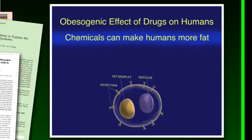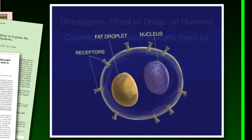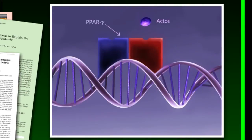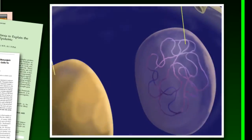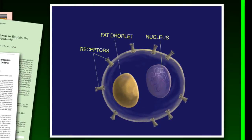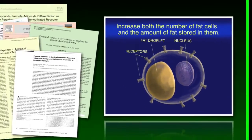An excellent example is a class of drugs called thiazolidinediones, like Actos and Avandia, which are given to type 2 adult-onset diabetics. This phenomenon has been well documented for more than 15 years. The drugs activate PPAR gamma, increasing the expression of its target genes. This has two effects, one intended and the other not. In some cells, activation of PPAR gamma increases insulin sensitivity, which reduces blood sugar. However, the drugs have the unwanted side effect of increasing both the number of fat cells and the amount of fat stored in them.